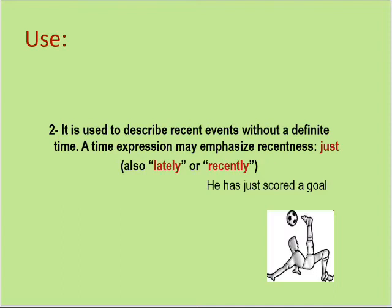The second use: present perfect tense is used to describe recent events without a definite time. A time expression may emphasize recentness — جیسے lately یا recently۔ مثالیں: 'He has just scored a goal,' 'He has just recovered from his injury,' 'He has recently been to Paris.' یہ مختلف sentences ہیں جن میں ہم present perfect tense کو اس طریقے سے use کر سکتے ہیں۔